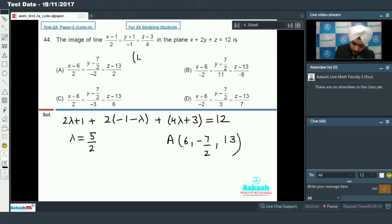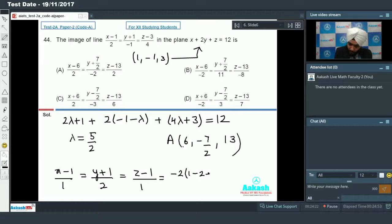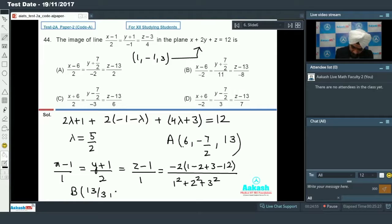So the point of intersection A will be 6, minus 7 by 2, 13. This point is on the plane through which both lines pass. Now take one point on this line: 1, minus 1, 3. Find the mirror image of this point with respect to this plane. The mirror image formula gives point B as 13 by 3, 17 by 3, and 19 by 3. The equation of line joining these two points is x minus 6 upon minus 2 equals y plus 7 by 2 divided by 11 equals z minus 13 by minus 8. The answer is option number B.